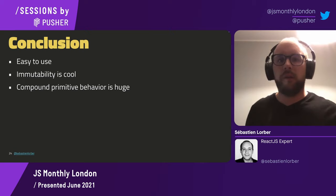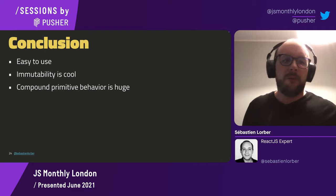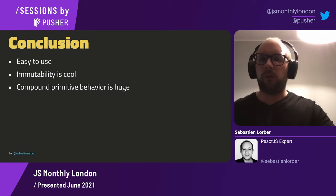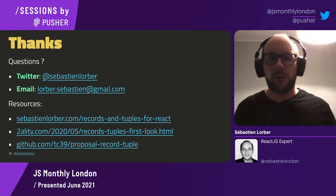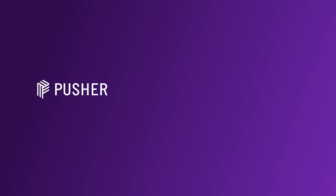To conclude, I think records and tuples are very easy to use. Immutability is one interesting aspect, but the most important one is really the compound primitive behavior, because it solves a lot of use cases we have in real-world applications. I tried to explain some React use cases here, but the impact extends to other frameworks as well. I've written a blog post about records and tuples for React on my site if you want to explore more use cases. Thank you for listening.